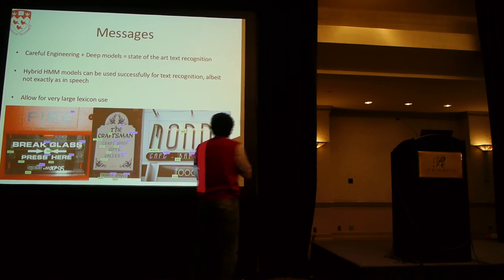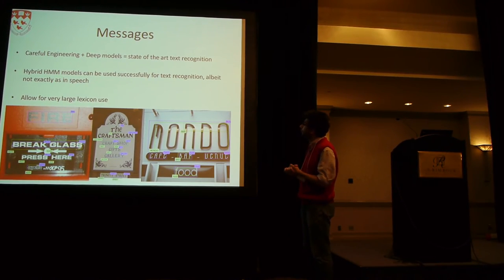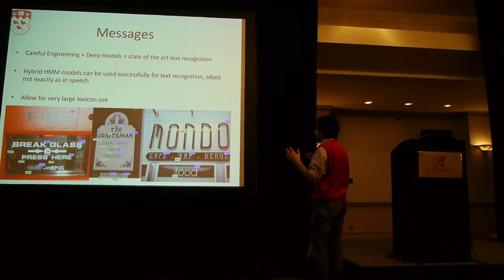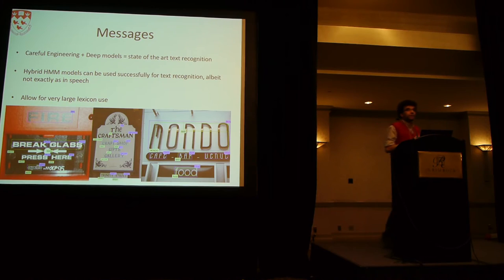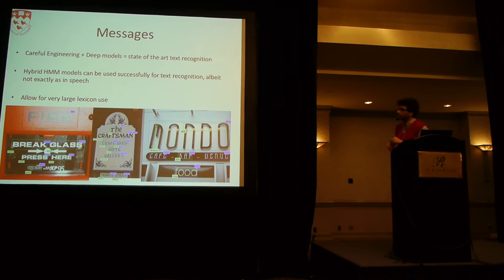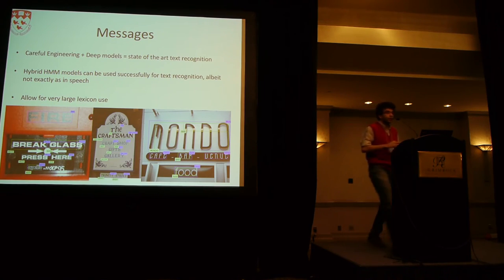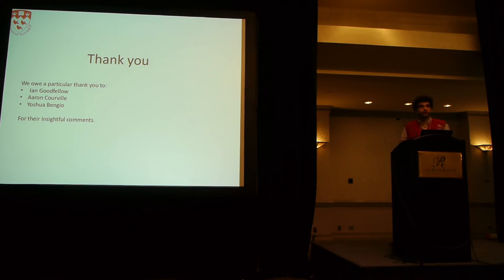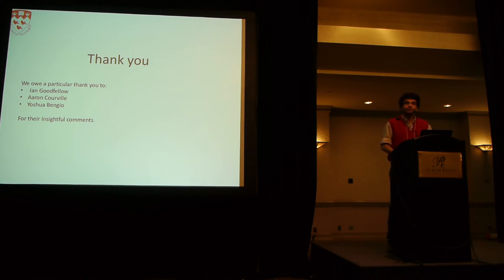The gist is very simple. With careful engineering and deep models, we can get state-of-the-art text recognition. With hybrid HMM models used for text recognition — similar to speech but not exactly as-is — we could probably also use recurrent neural nets and bidirectional recurrent neural nets, though we haven't tried that yet. Our work handles very large lexicons easily. Thanks to Ian, Aaron, and Joshua for their helpful comments.